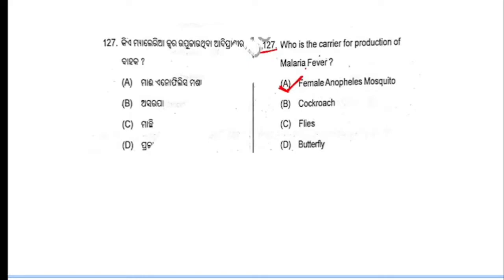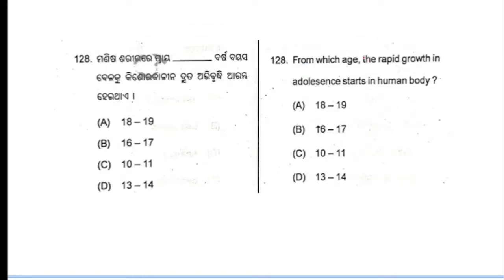Now moving to next question. Question number 128: from which age does rapid growth in adolescence start in the human body? There are three stages of adolescence: earlier, middle, and later adolescence. Rapid growth and changes due to hormonal changes and puberty occur during the earlier adolescence stage.